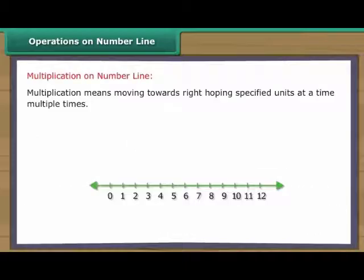Multiplication means moving towards right, hopping specified units at a time, multiple times. For example, 2 into 5. Start from 0, move 2 units at a time to the right, make such 5 moves. You will reach 10. So we say 2 into 5 is equal to 10.